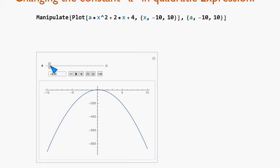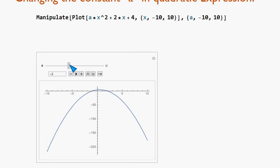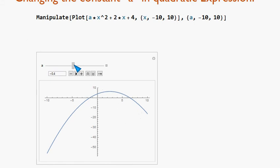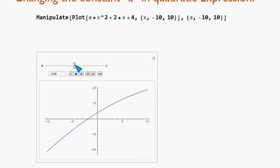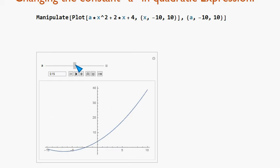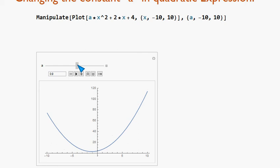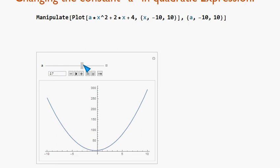Again, I am moving a towards 0. And notice what happens when a becomes 0. We hope it should become a straight line. It is straightening now. It is approximately a straight line. And it has again crossed 0, and it is opened upward.